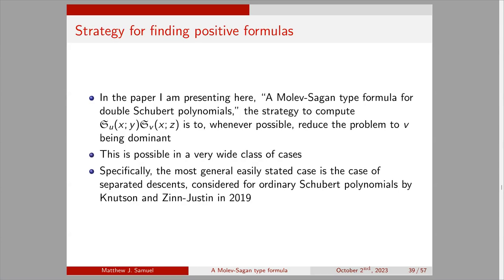The strategy in this paper — which has the same name as the talk, 'A Molev-Sagan Type Formula for Double Schubert Polynomials' — is to compute S_u(x,y) times S_v(x,z) by reducing the problem to v being a dominant permutation, which can be computed with the Pieri formula. The most general easily stated case where this is possible is when u and v have separated descents, which Knudsen and Zenderson considered in 2019 for ordinary Schubert polynomials.